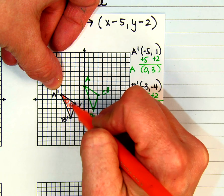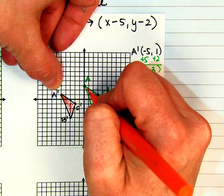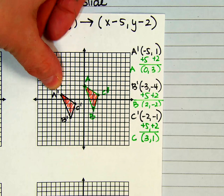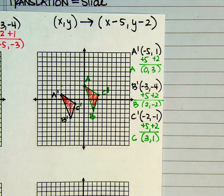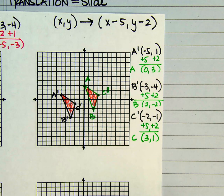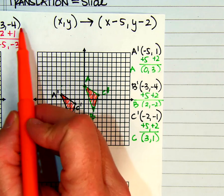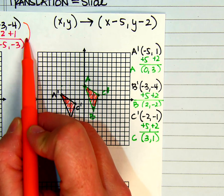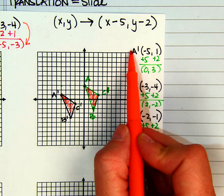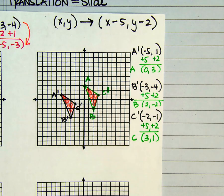Again, that is a congruence transformation. So when you are doing these, you need to pay attention whether or not you are going from the preimage to the image, or if you're going from the image to the preimage.